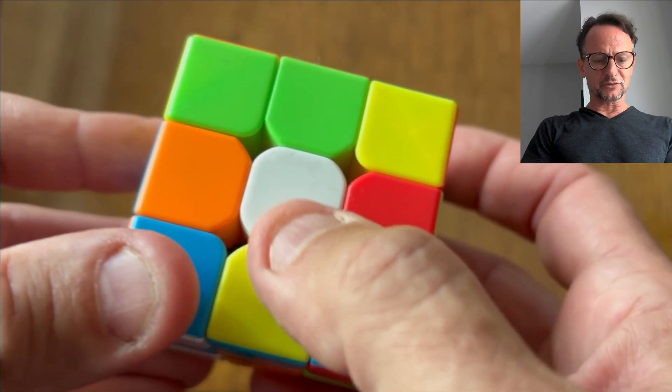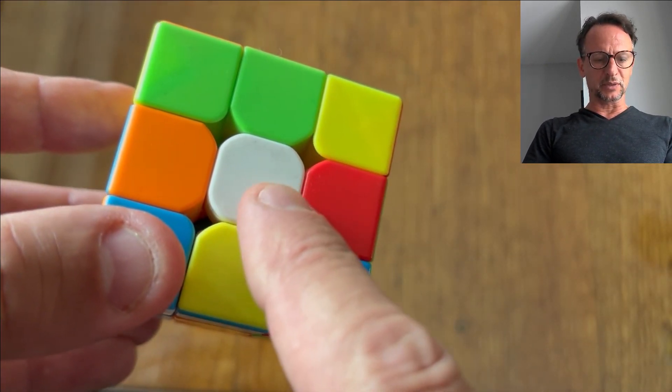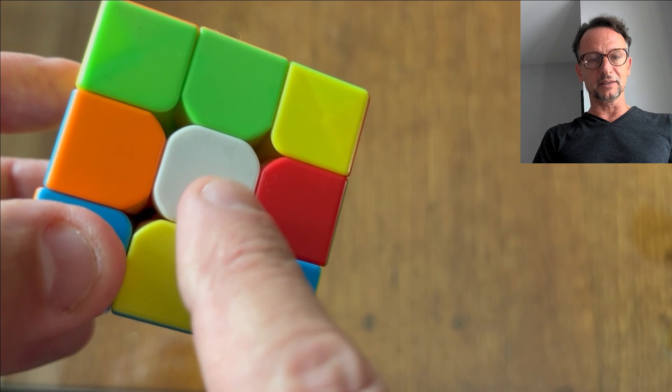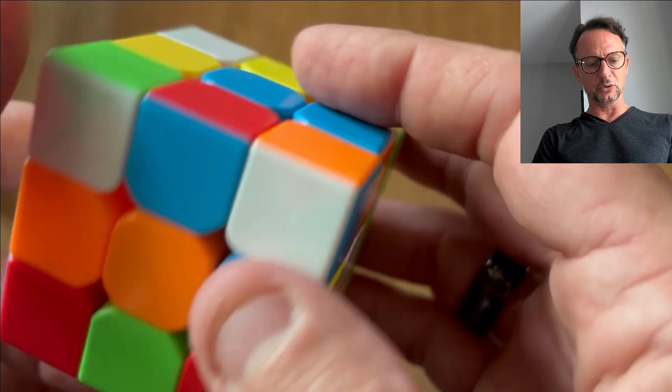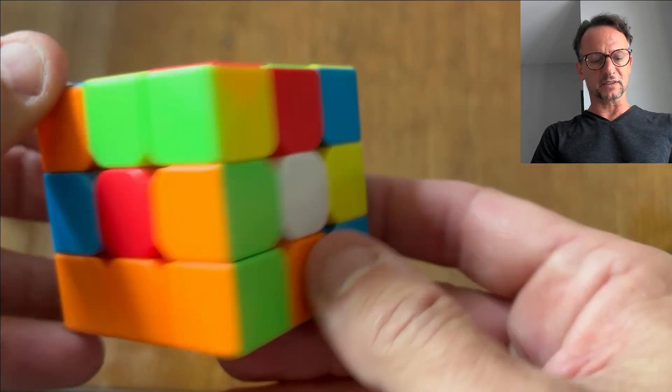So we start from the white side. We know it's the white side because the spot in the center is white. That's the green side, yellow, blue, orange, and red side.